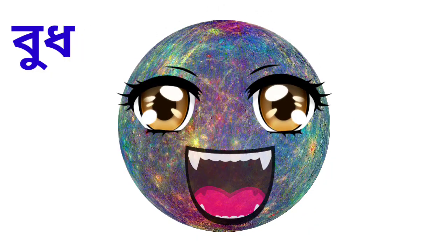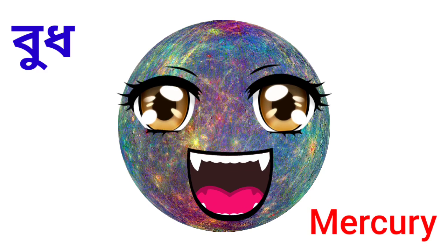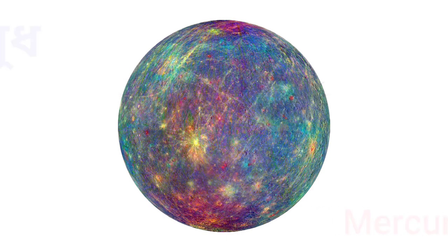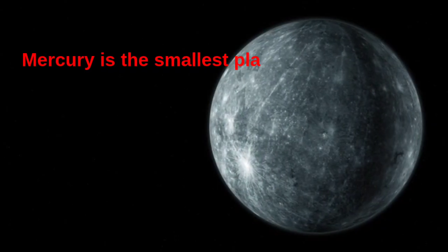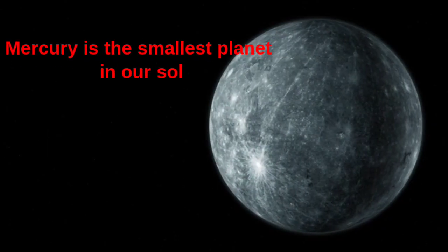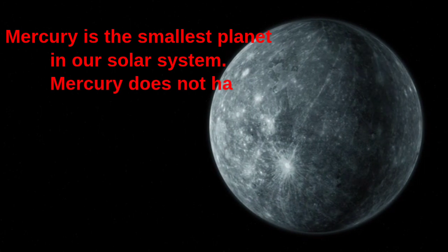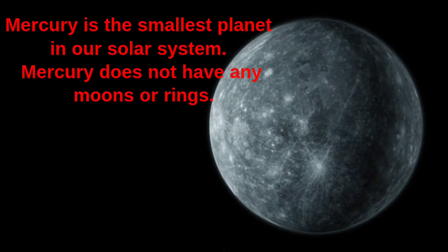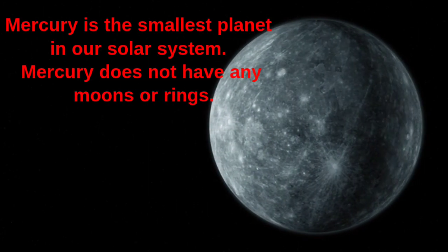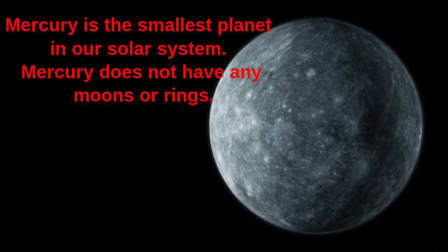Booth. Booth ke English e bale Mercury. Mercury is the smallest planet in our solar system. Mercury does not have any moons or rings.